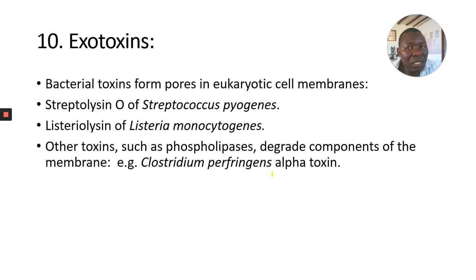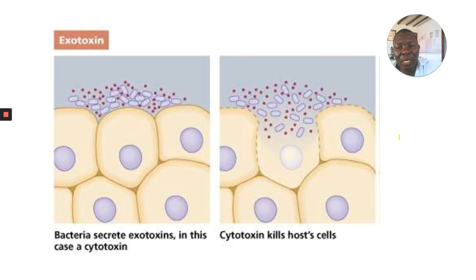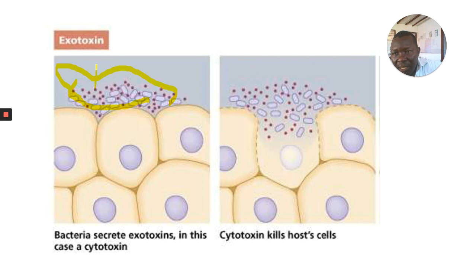Exotoxins are toxins released outside the cell — the cells don't need to die or be lysed for exotoxins to be released. Bacteria form pores in the host cell membrane — that is one effect of exotoxins. Examples of exotoxins include Streptococcus pyogenes streptolysin, Listeria monocytogenes toxins, and other toxins such as phospholipase that degrade components of the membrane, for example Clostridium perfringens alpha toxin. As bacteria multiply and colonize the cells of the body, they produce these exotoxins without needing to die.